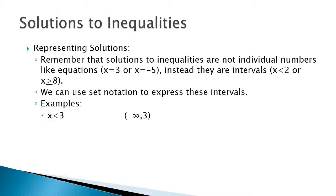For example, x is less than 3 can be written as the interval from negative infinity to 3. The left-hand part indicates where the answer starts, and the right-hand part indicates where it ends. Since this answer doesn't really have a starting point — it's everything up to 3 — we indicate that by using negative infinity. If it's in between two numbers like this, 1 is less than x, which is less than 5, then we have a starting and ending point.